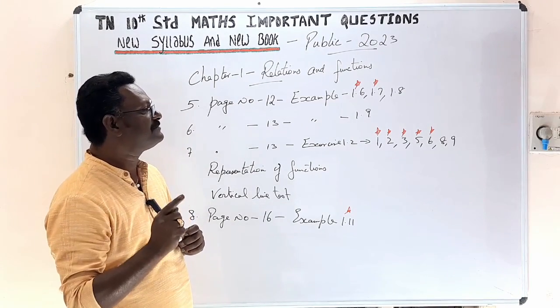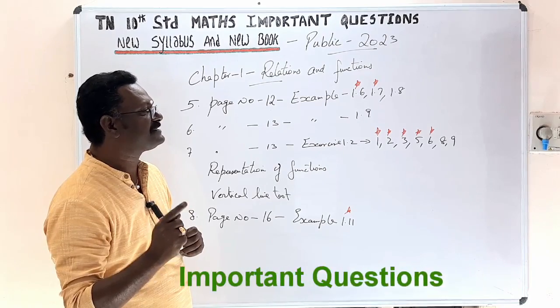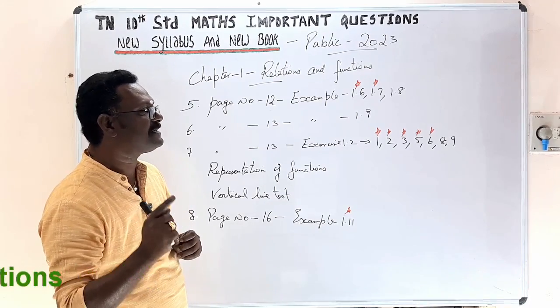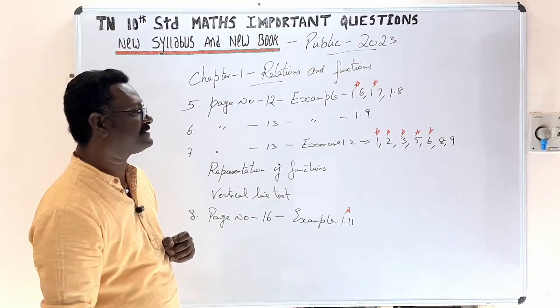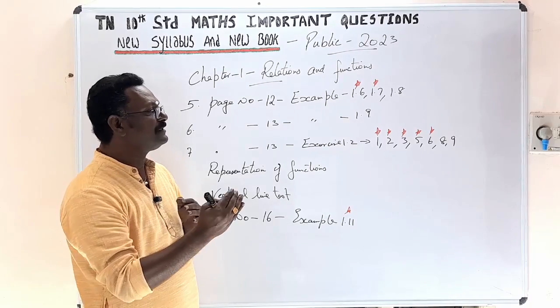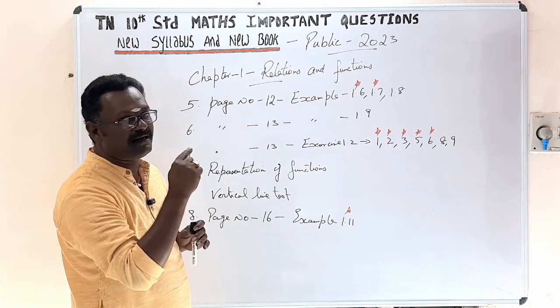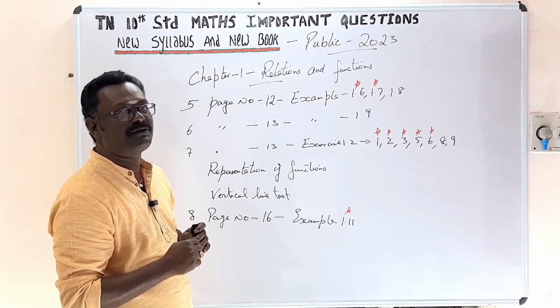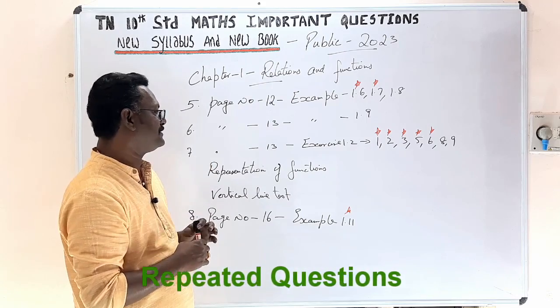In Exercise 1.2, mark the important sums in red — these will be repeated questions. The 1st, 2nd, 3rd, 5th, 6th, 8th, and 9th sums are the ones to focus on, as they are frequently repeated in exams.